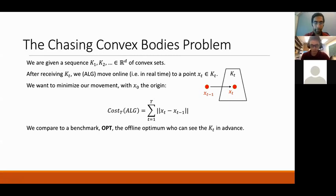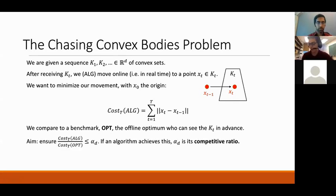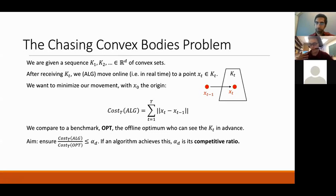We start at the origin, and the cost of our algorithm up to time t is the total distance of the path we move along in the first t time steps. We compare to a benchmark OPT — the optimal solution that sees all sets in advance. OPT always takes the best path. We take the viewpoint of competitive analysis: we try to ensure our cost is at most α times OPT's cost for some constant α depending on dimension.